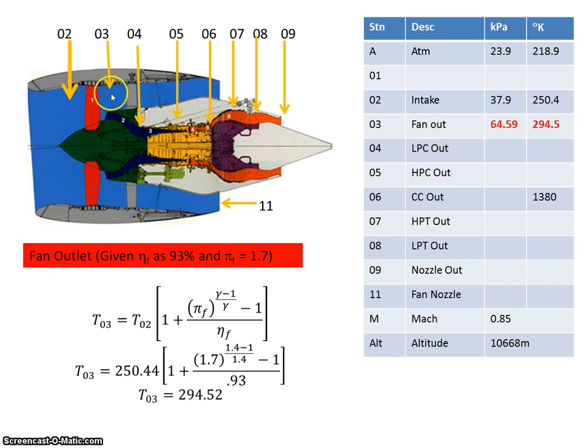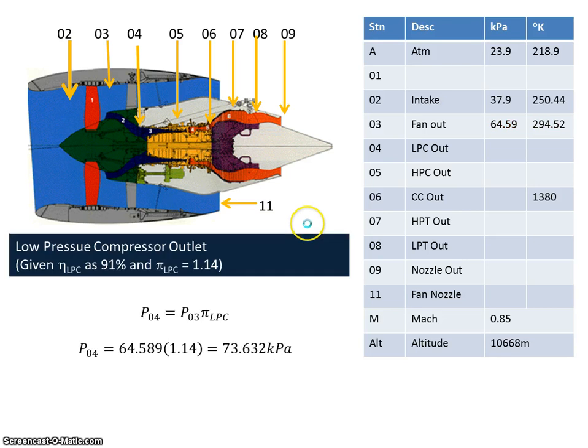So the output of the fan, this point here, feeds the low pressure compressor. We are told that the low pressure compressor has an efficiency of 91% and has a pressure ratio of 1.14. Therefore, the pressure at station 4 is the fan outlet pressure multiplied by the low pressure compression ratio. That's 64.589 kilopascals multiplied by 1.14, which gives me 73.632 kilopascals.